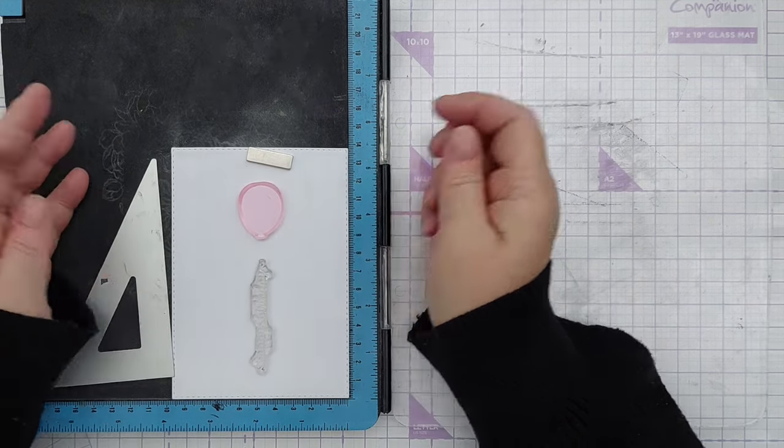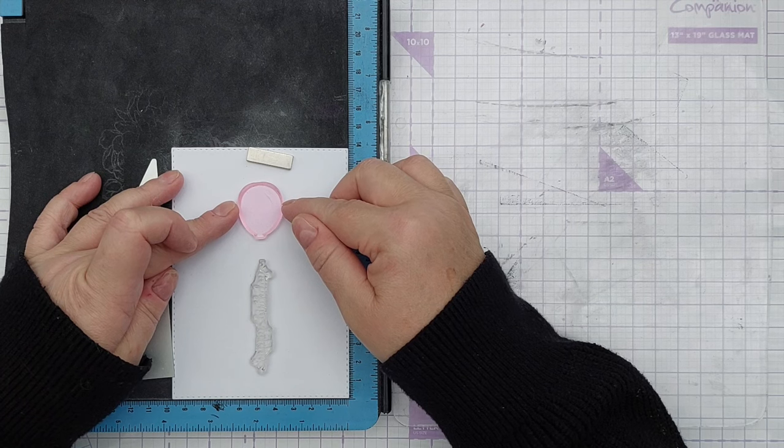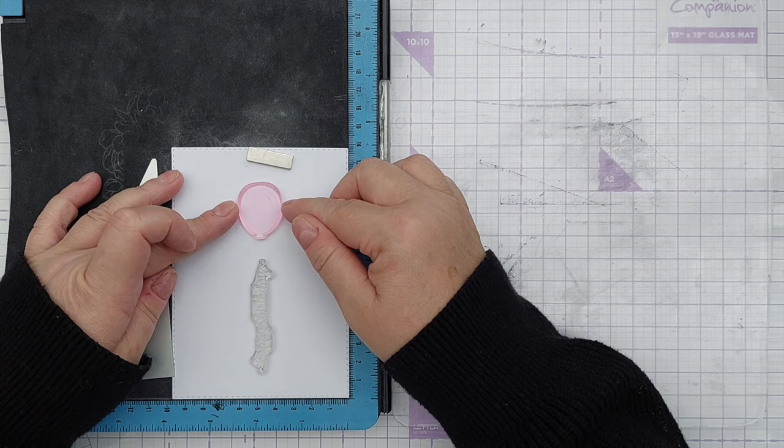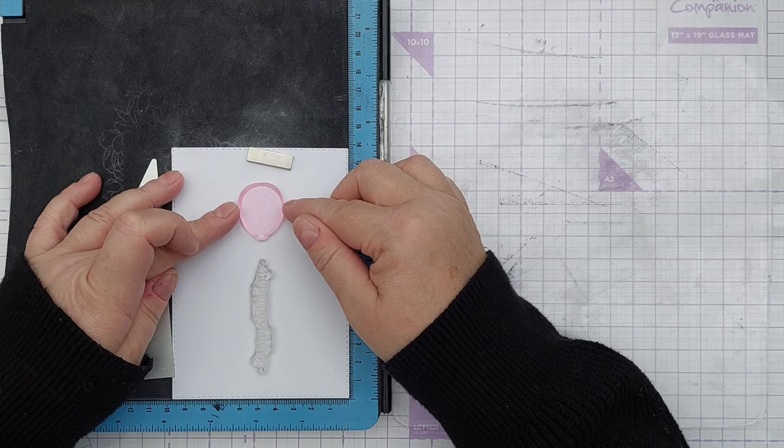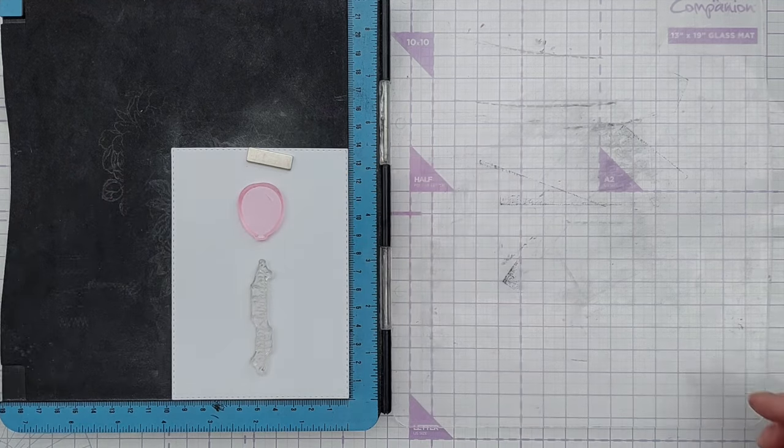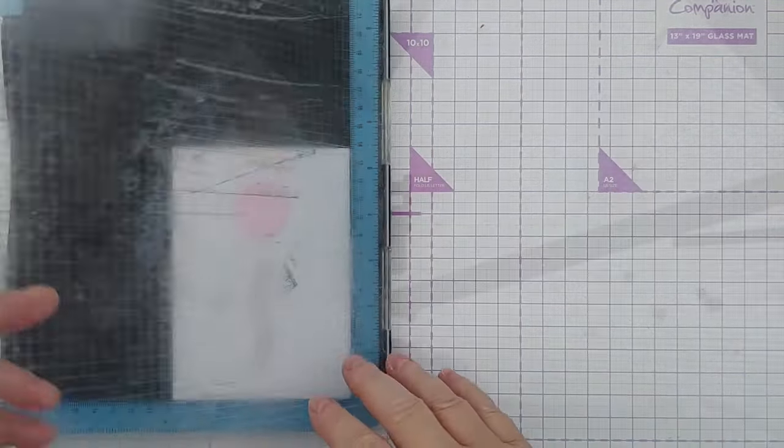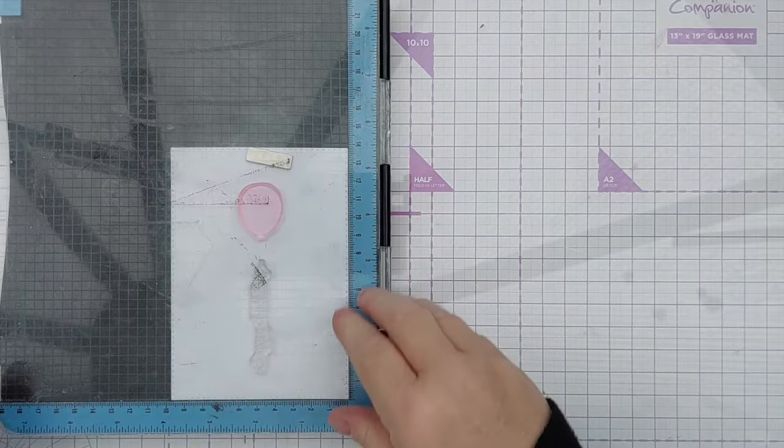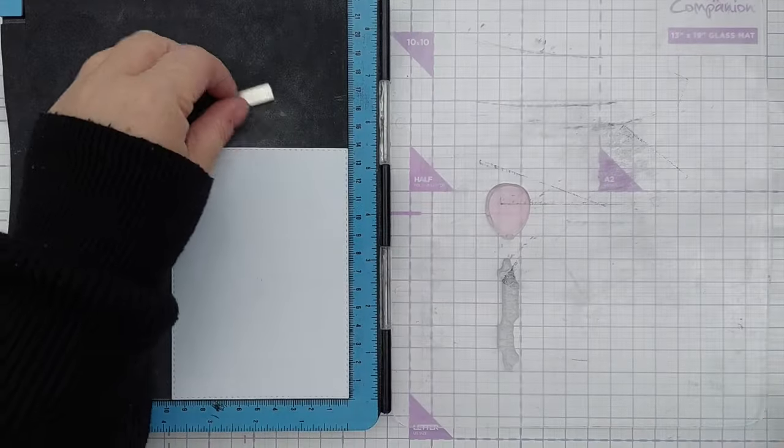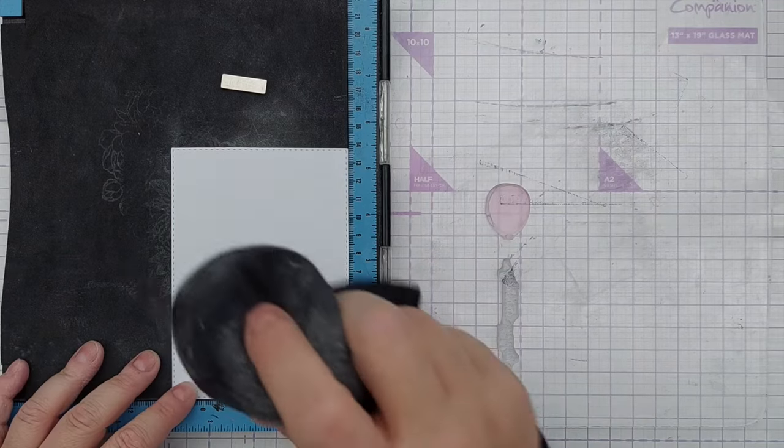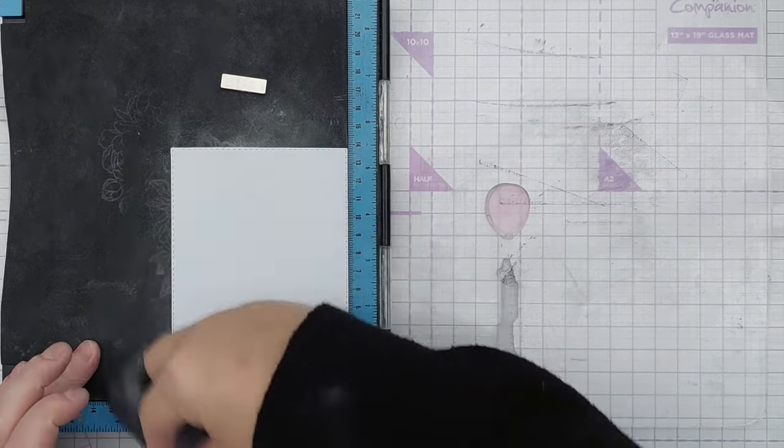I decided to use my stamp positioner today because I knew I was probably going to need to stamp each stamp more than once, and the stamp positioner gives me that little bit of confidence and accuracy. I can stamp again and again and get my stamps in exactly the same position.